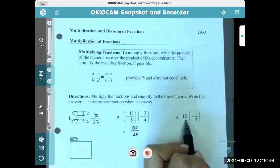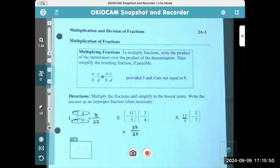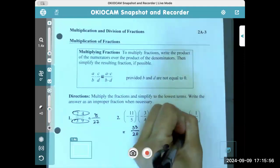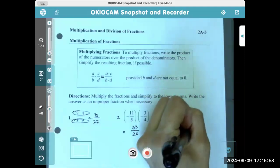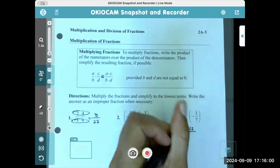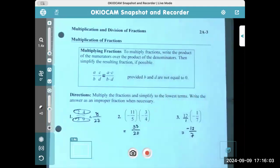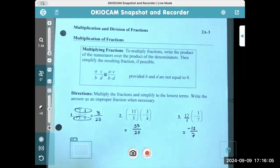And then remember, anything can be written over one. So this is 12 over one times negative one seventh. So the 12 times the negative one is negative 12, and then one times seven is seven. That's really it.